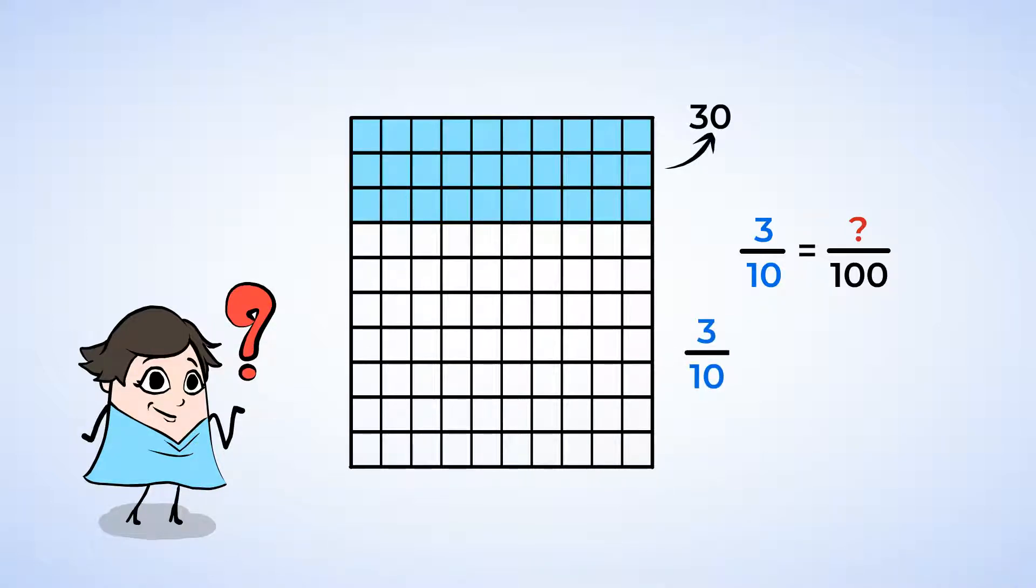Remember, with equivalent fractions, what you do to the denominator, you have to do to the numerator. By splitting the rectangles into 10 parts, we essentially multiplied the denominator by 10. And since the denominator was multiplied by 10, the numerator was multiplied by 10 as well. And 3 times 10 is 30. And that's how we've just converted 3 tenths to 30 hundredths. I like this. Let's keep on going.